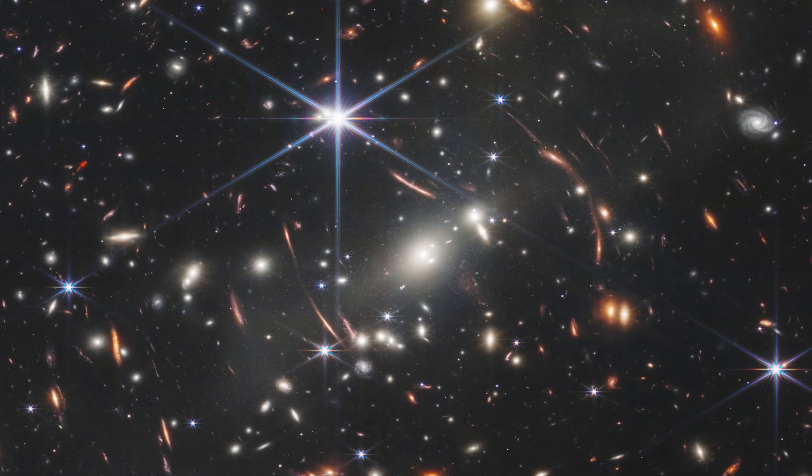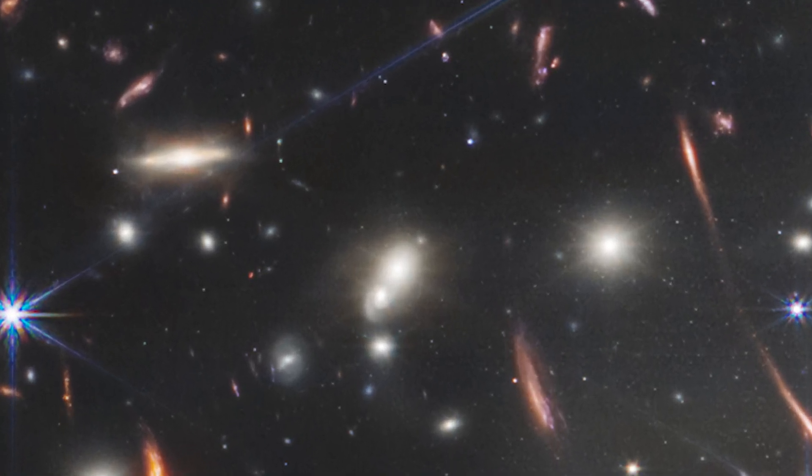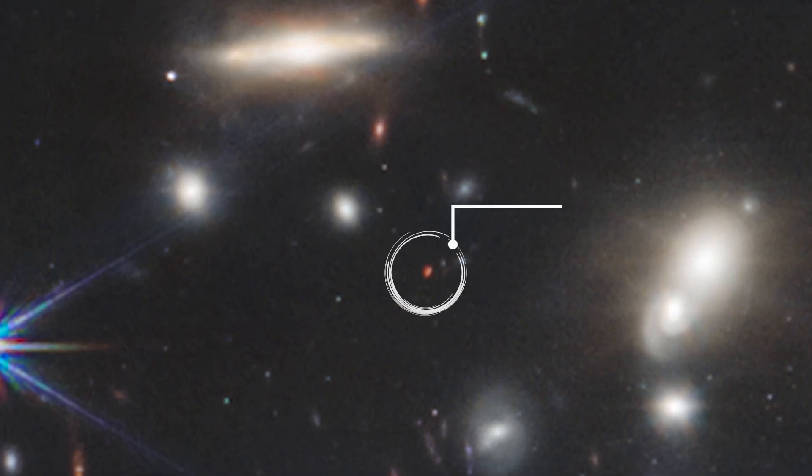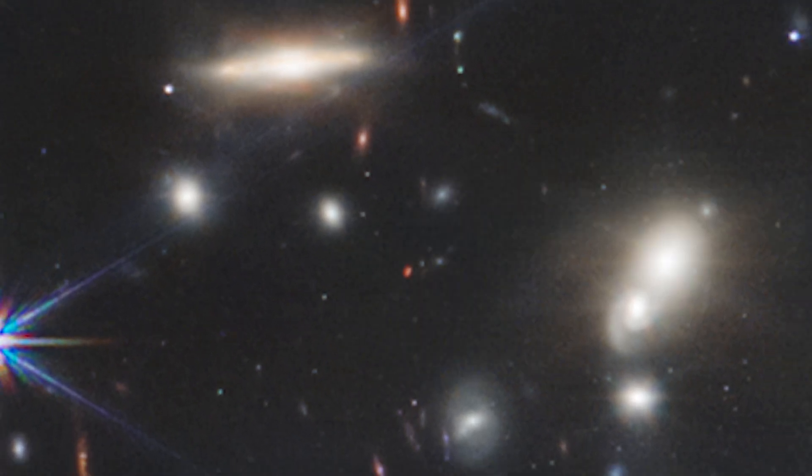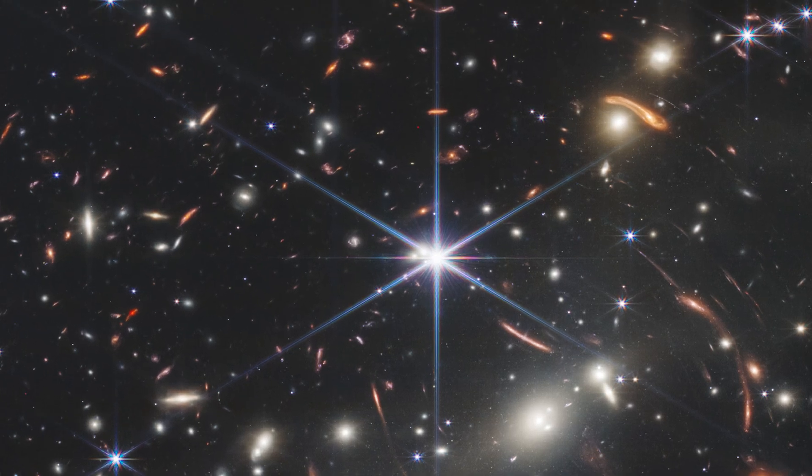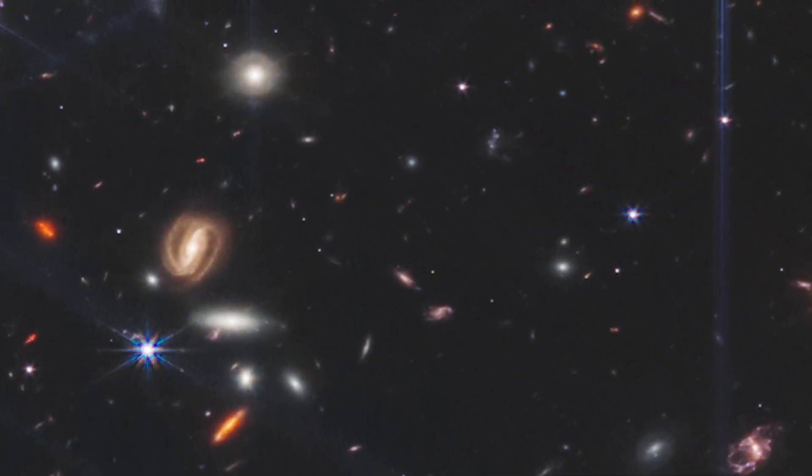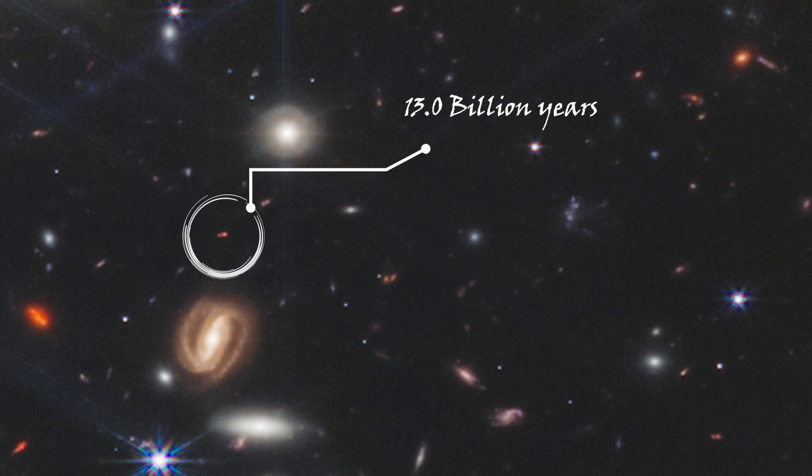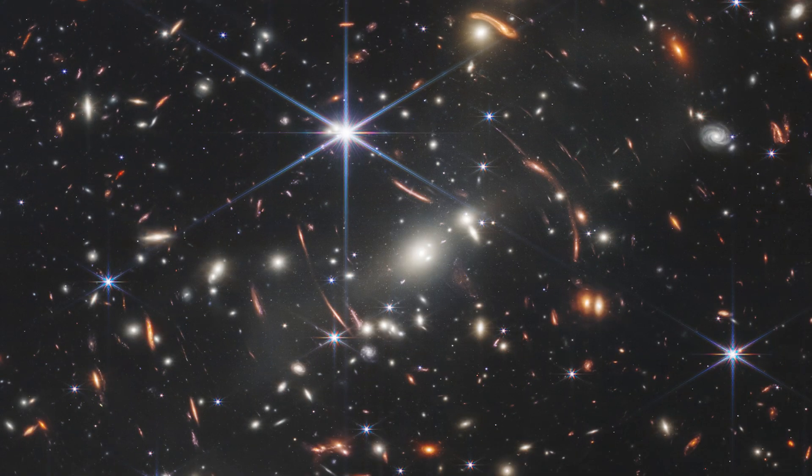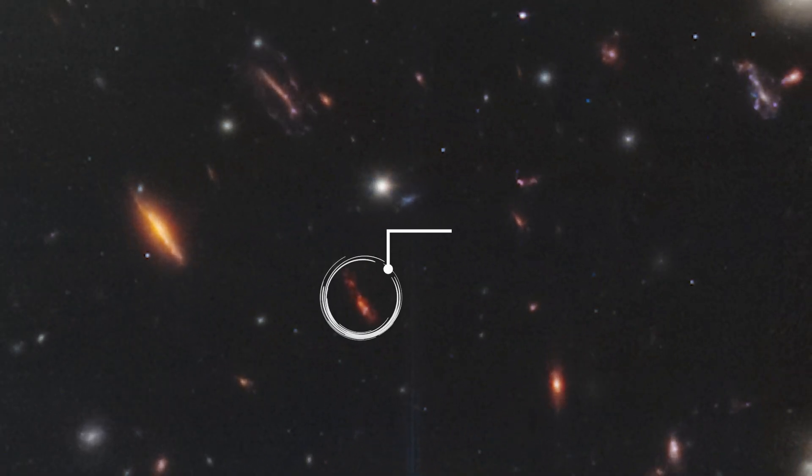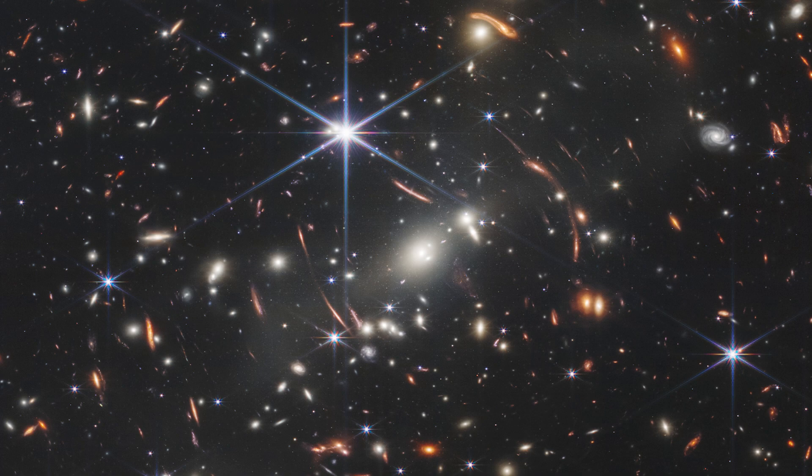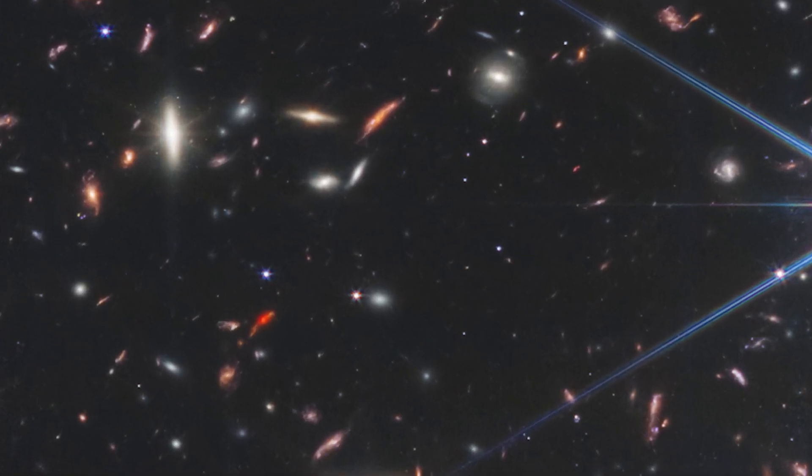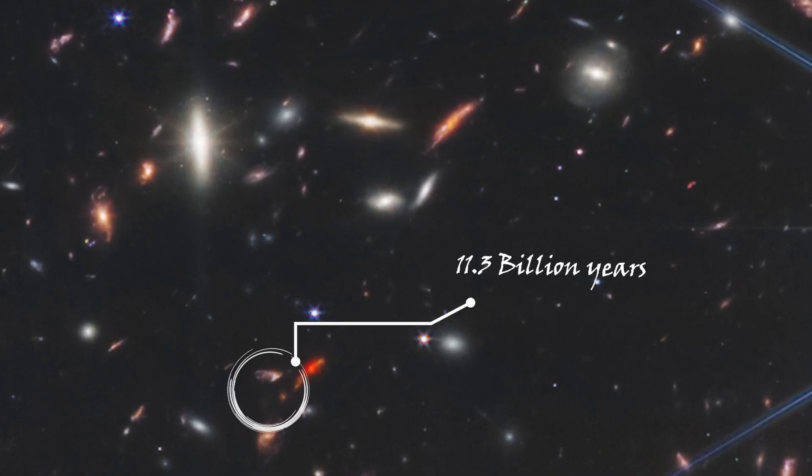Before Webb's mirrors were able to collect the light from the farthest galaxy visible here in the image, it had traveled 13.1 billion years. Another galaxy may be seen here that is 13 billion years away. Another one here that is 12.6 billion years away. And this one is another galaxy that is 11.3 billion years distant.